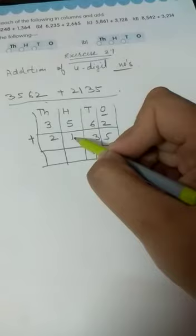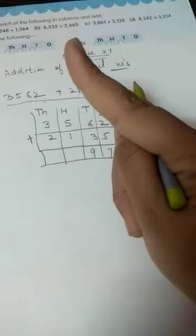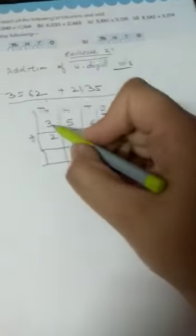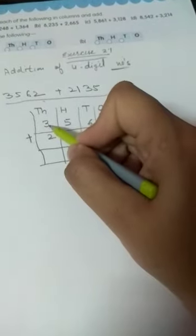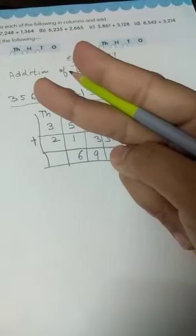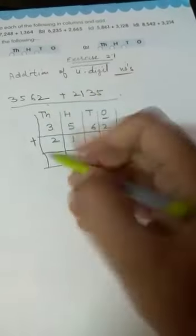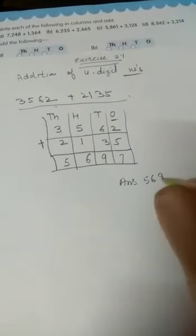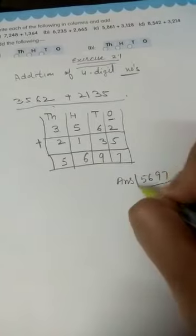5 plus 1. 5 is in my mind. Open 1 finger. After 5 is 6. So write down 6 here. 3 plus 2. 3 is in my mind. Open 2 fingers. Start counting from the next number. 4 and 5. So my answer is 5697.